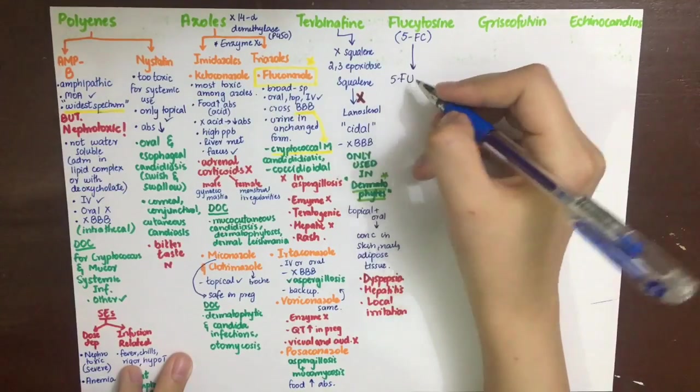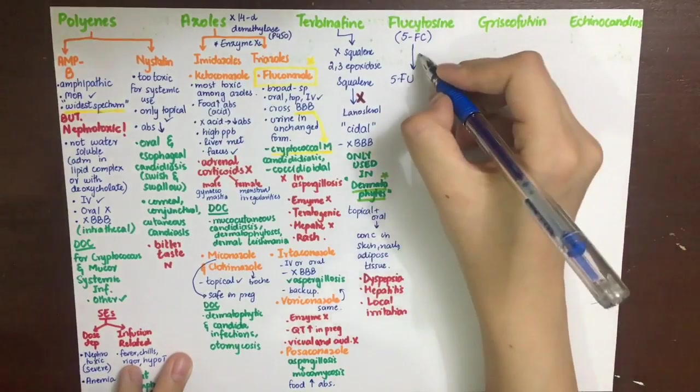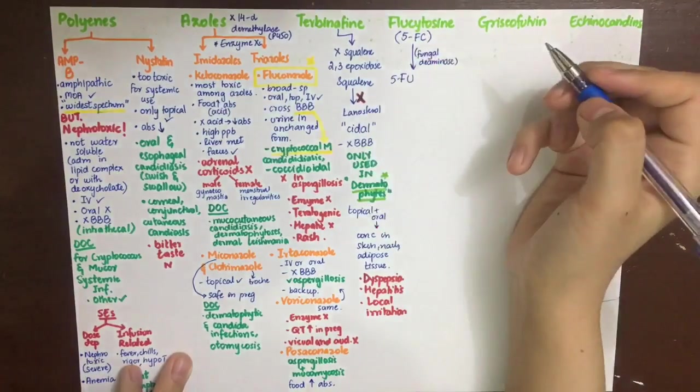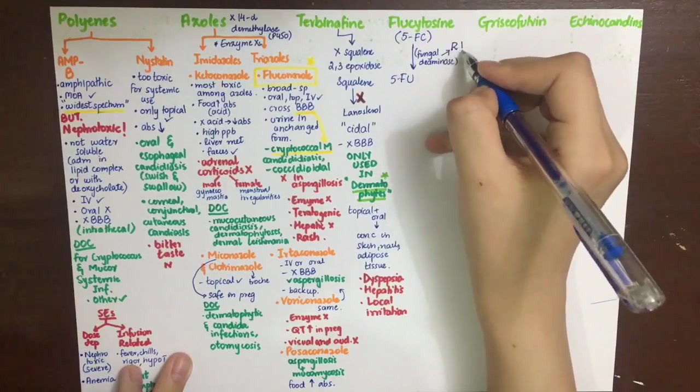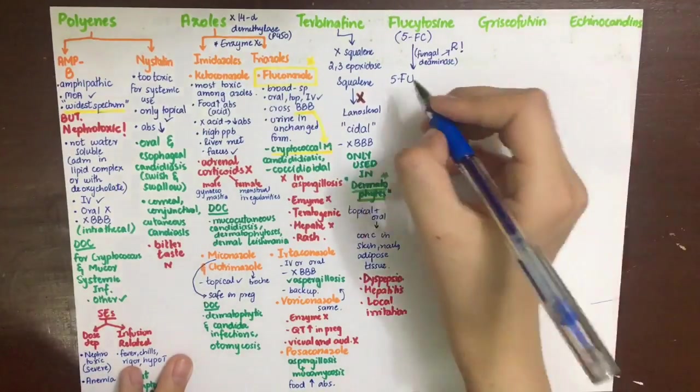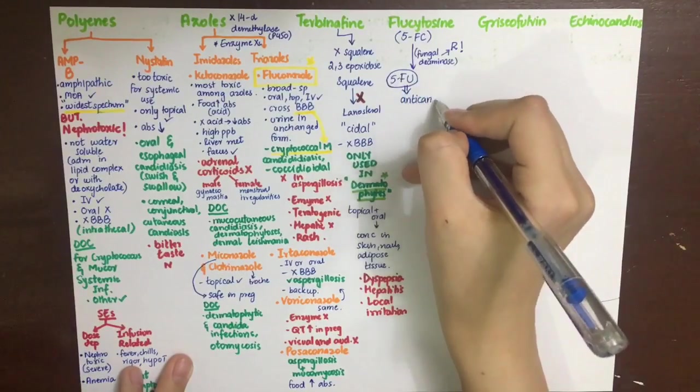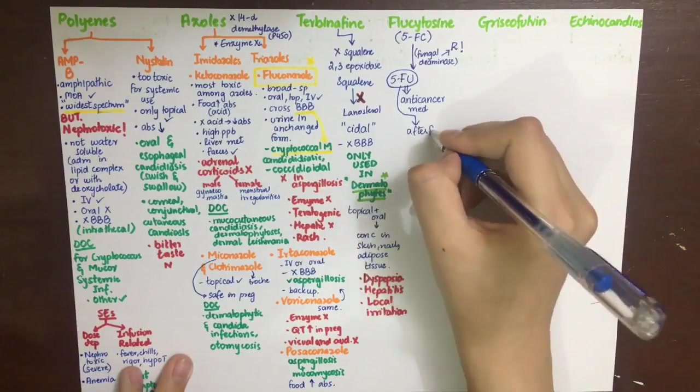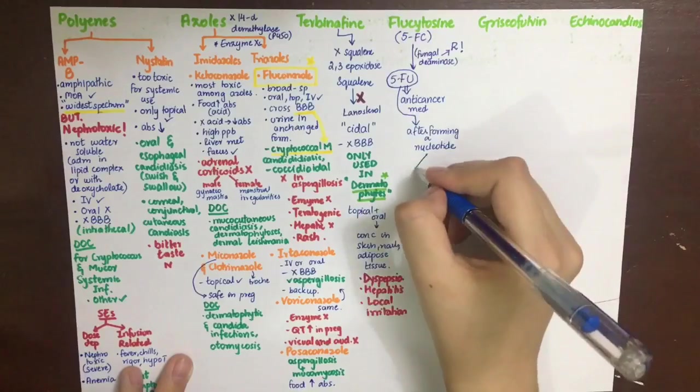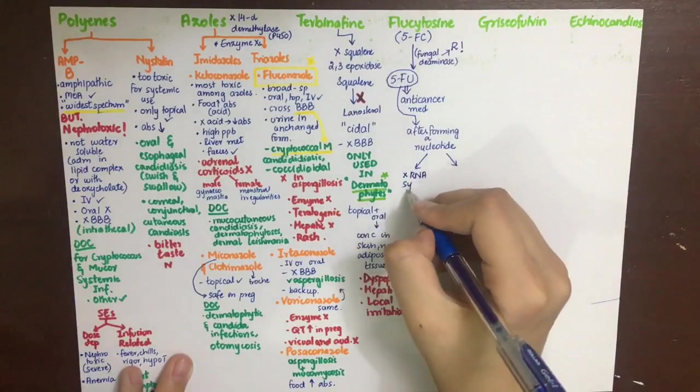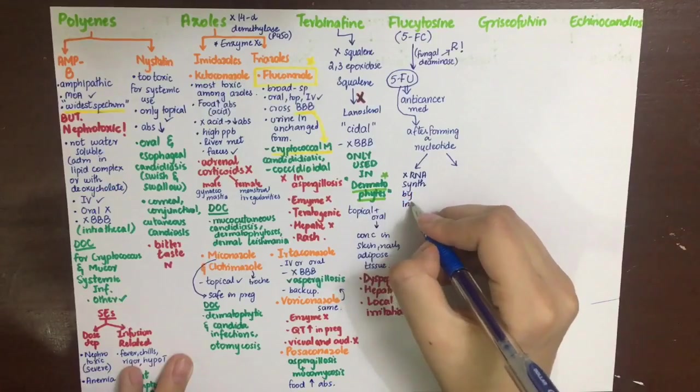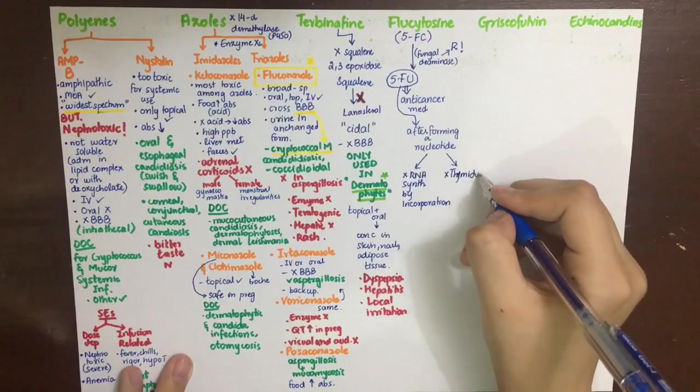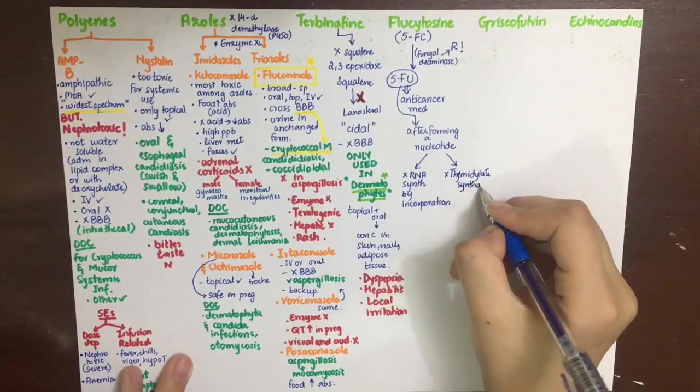This is actually a stupid thing to ask for because you're asking the fungus to play a part in its own murder. The fungus knows better and will not give you those enzymes, thus becoming resistant to this drug. But let's say the fungus was stupid enough to convert the prodrug into active form. This active form, 5-fluorouracil, is actually an anticancer medication which, after forming a nucleotide by triphosphorylation, will get incorporated into RNA and stop its synthesis. It also inhibits thymidylate synthase enzyme and thus will inhibit the synthesis of thymine.